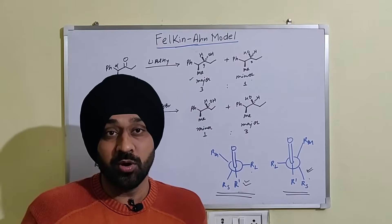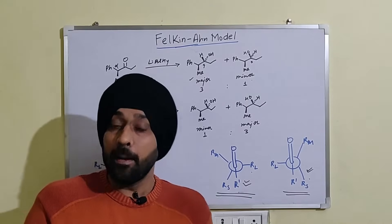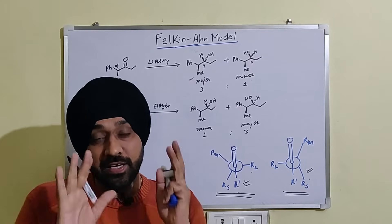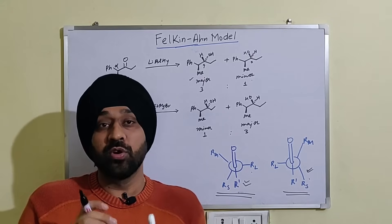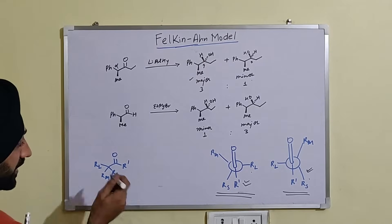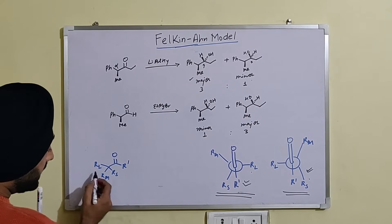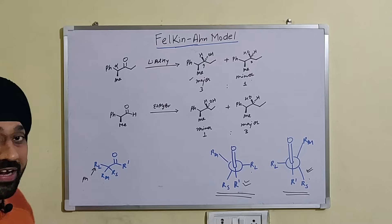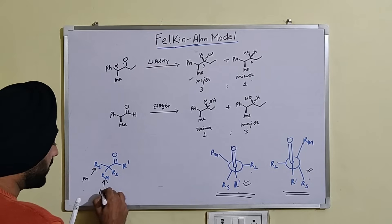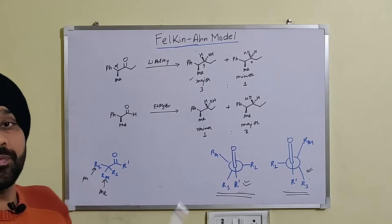Felkin-Anh was the scientist who proposed this model, taking into consideration various steric factors around the carbonyl group and the approach of nucleophiles, as a result of which we can absolutely predict the diastereoselectivity — which one is going to be the major compound. Now let us look at what he said. If we have a carbonyl compound with three functional groups attached at the alpha carbon...